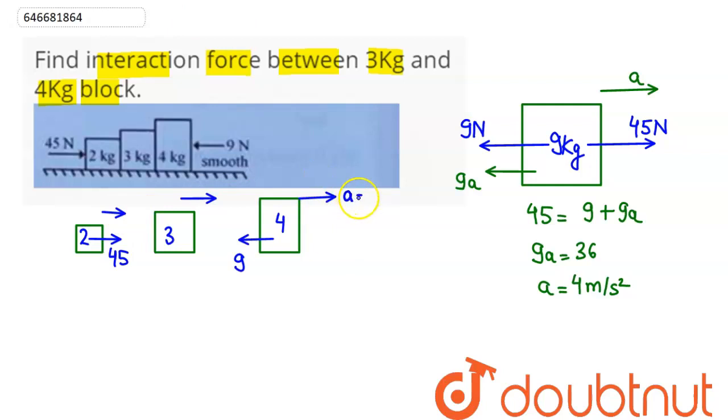So acceleration in all the 4 kg, 3 kg cases we have here as 4 to the right direction. We need to find interaction between 3 and 4 kg. So here we can say the interaction force here between 3 and 4.